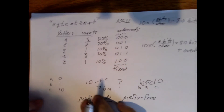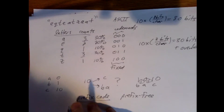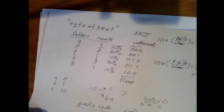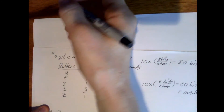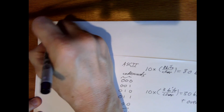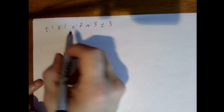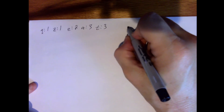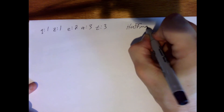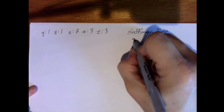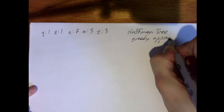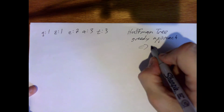Using the same example, we sort the characters by frequency: Q appears once, Z appears once, E appears twice, A appears three times, and T appears three times. We're going to produce a Huffman tree using a greedy approach, which will give us our prefix codes.